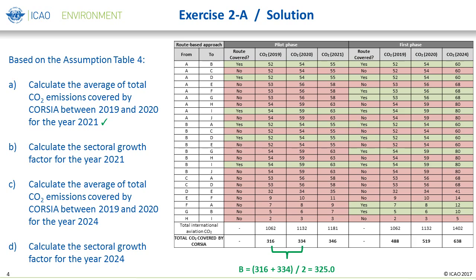In this scenario, six routes are covered in our CORSIA world in 2021. Therefore, the total CO2 emissions for those routes are summed for 2019 and separately for 2020, which are 316 and 334 respectively. These values are then added together and divided by two to calculate the average total CO2 emissions covered by CORSIA for the year 2021, or the 2021 sectoral baseline, which is 325.